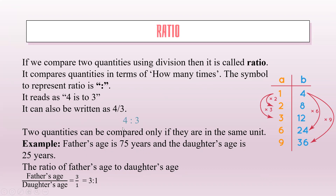It can be represented like this. Two quantities can be compared only if they are in the same unit. Example: father's age is 75 years and the daughter's age is 25 years. The ratio of father's age to the daughter's age is father's age divided by daughter's age, which gives us 3. So father's age is 3 and daughter's age is 1, and it can be represented as 3 is to 1.